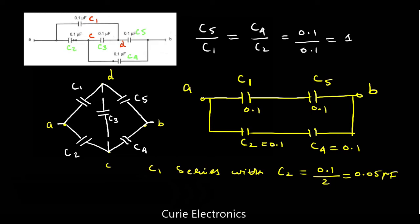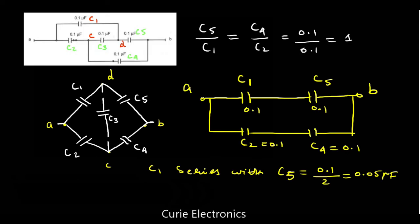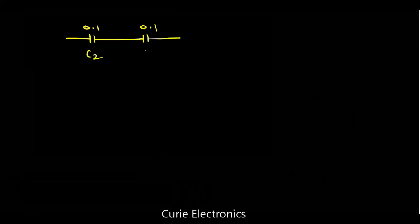for the next branch also, C2 and C4 branch, for the next branch C2 and C4, we get the similar value. We have 0.1 microfarad, one more 0.1 microfarad, which is the C2 and C4 branch. If we take the equivalent capacitance, C total equals 0.1 upon how many capacitors? That is 2. So we will get 0.05 microfarad.